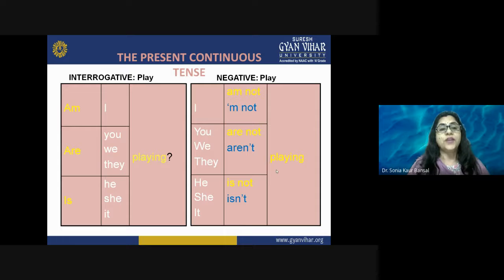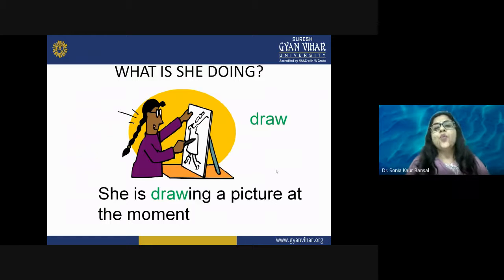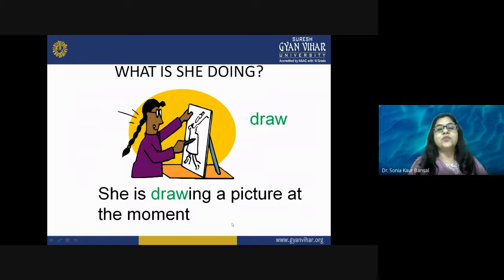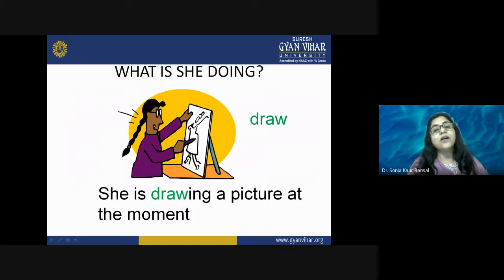The present continuous can be used in affirmative, negative, and interrogative forms. When the helping verb is used in front of the sentence, we frame an interrogative. For example: 'Is he playing football at the moment?' Answer: 'No, he isn't. He is running.' And: 'What is she doing?' — 'She is drawing a picture at the moment.' The action of drawing is still being continued, being done by the person as the speaker tells us.